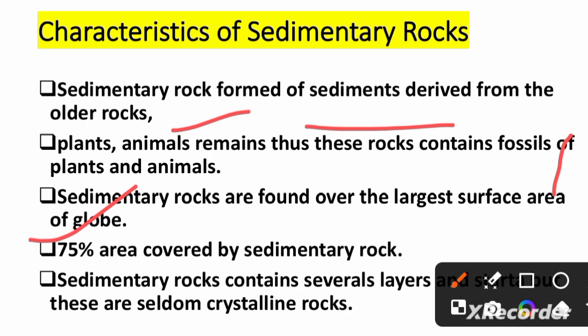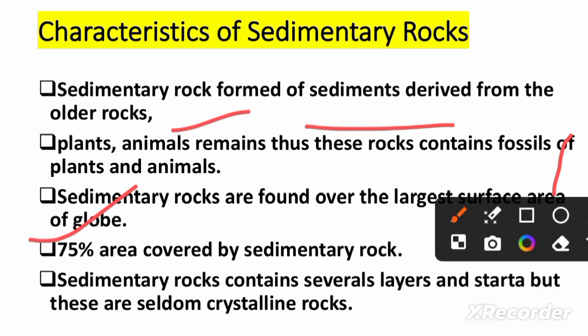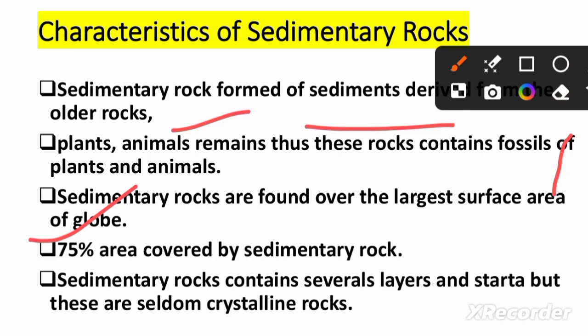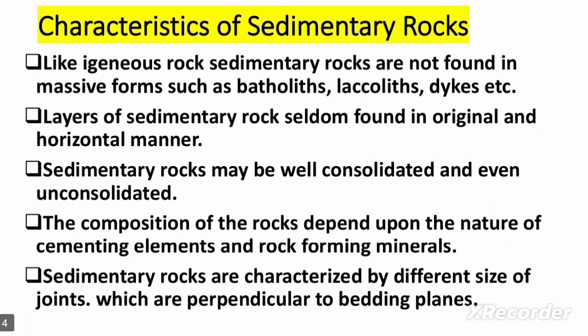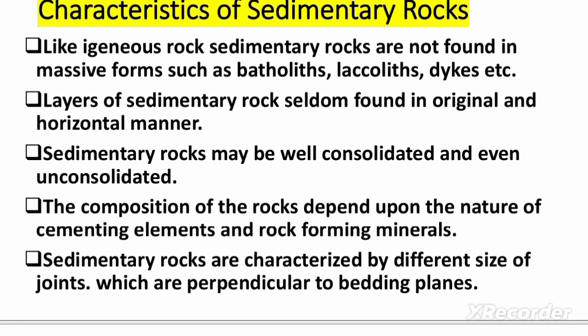Sedimentary rocks contain several layers and strata, but these are seldom crystalline rocks — they are not found in crystal form. Unlike igneous rocks, sedimentary rocks are not found in massive forms such as batholiths, laccoliths, dikes, etc. — those massive forms we saw for igneous rocks do not apply here.